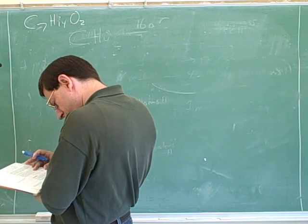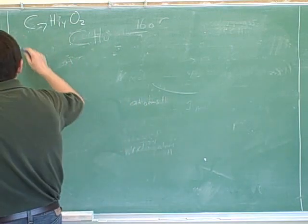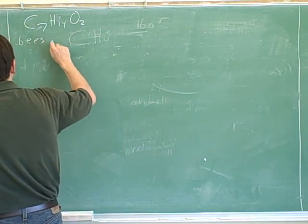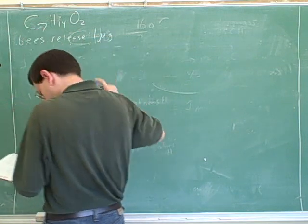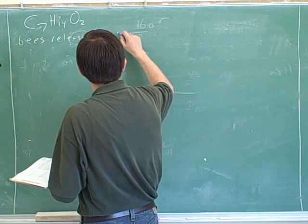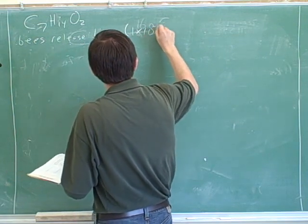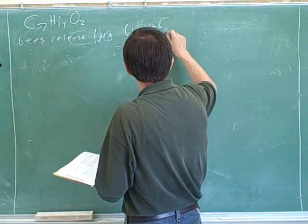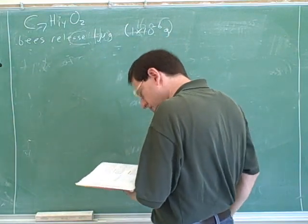Can be produced commercially. Bees release about 1 microgram, 1 times 10 to the negative 6 grams of this compound when they sting.